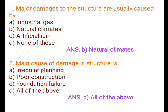Question 1: Major damages to the structure are usually caused by: A. Industrial gas, B. Natural climates, C. Artificial rain, D. None of these.